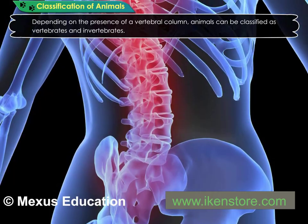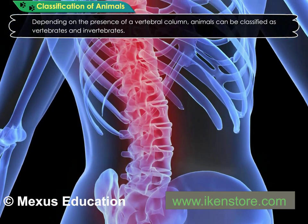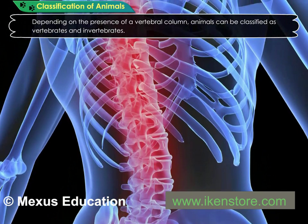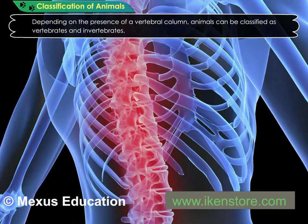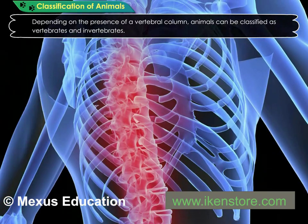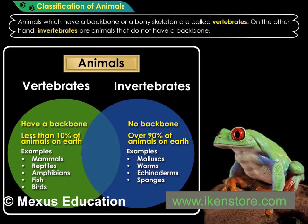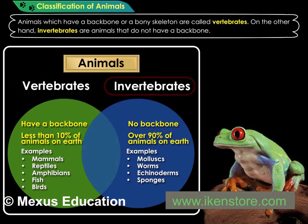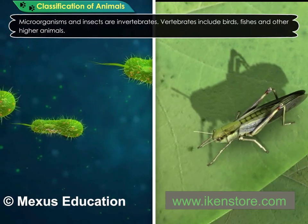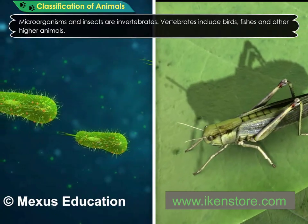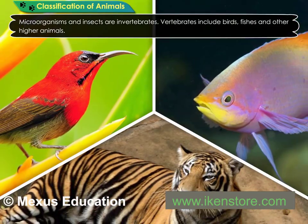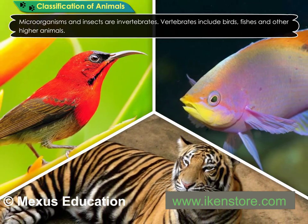Depending on the presence of a vertebral column, animals can be classified as vertebrates and invertebrates. Animals which have a backbone or a bony skeleton are called vertebrates. On the other hand, invertebrates are animals that do not have a backbone. Microorganisms and insects are invertebrates. Vertebrates include birds, fishes, and other higher animals.